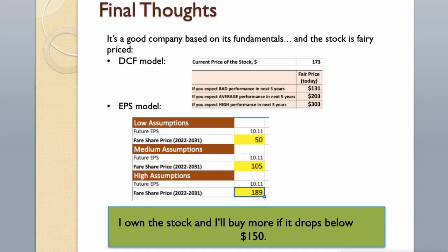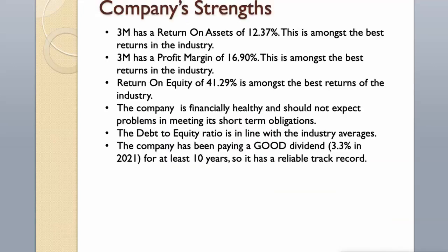My thoughts: it's a good company based on its fundamentals, and the stock is fairly priced. I own the stock and I'll buy more if it drops below $150. Company strengths: 3M has a return on assets of 12.37%, which is amongst the best in the industry. The profit margin is 16.90% and return on equity is 41.29%, both amongst the best in the industry. The company is financially healthy and should not expect problems meeting its short-term obligations. The debt-to-equity ratio is in line with industry averages. The company has been paying a good dividend of 3.3% in 2021 for at least 10 years, giving it a reliable track record.